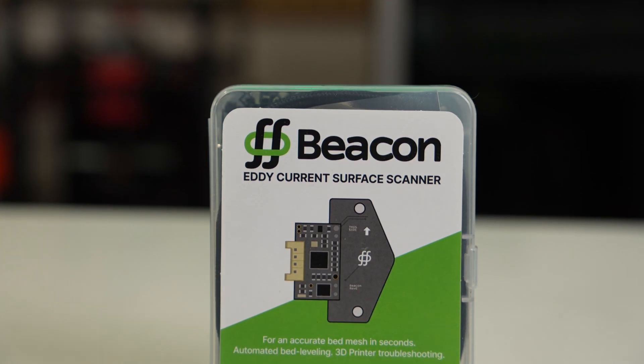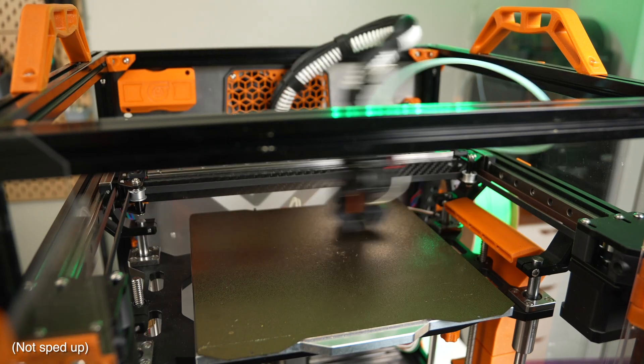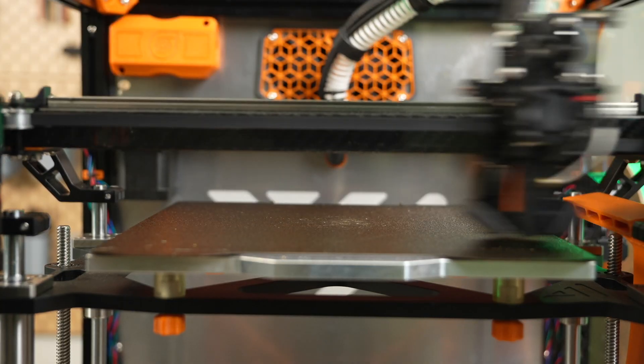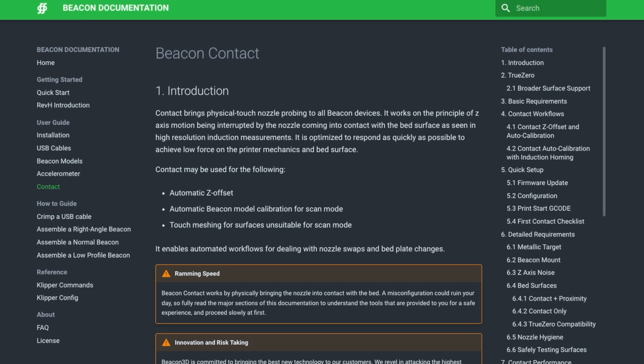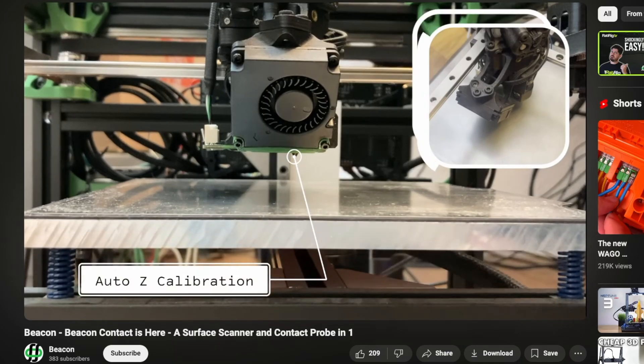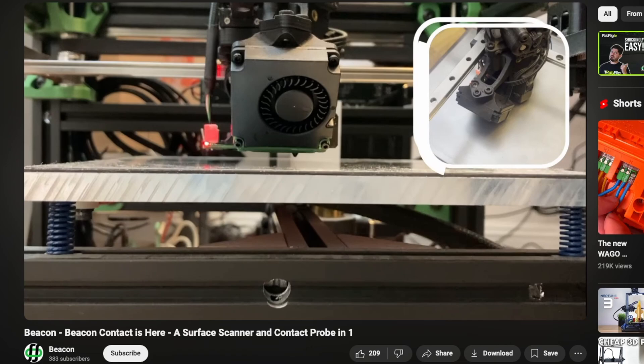For bed leveling, Takeoff is intended to be used with Beacon. We dedicated a full video to this eddy current surface scanner, and I would argue that this is my favorite bed leveling option out there. Combined with the updated firmware that allows for contact, when set up, you get crazy quick accurate meshes and automatic Z-offsets.